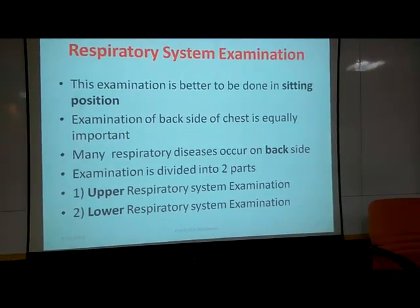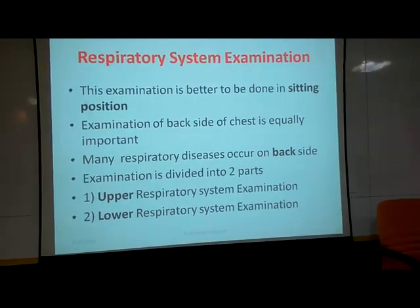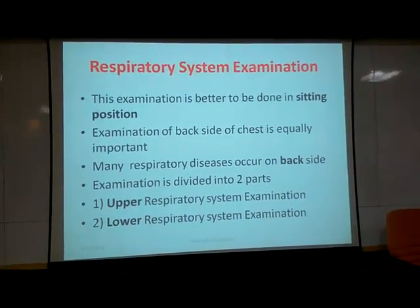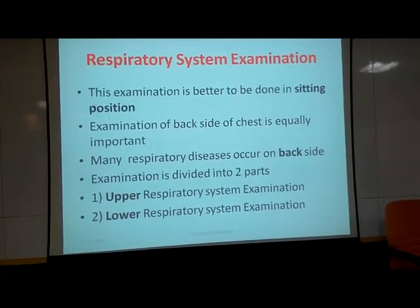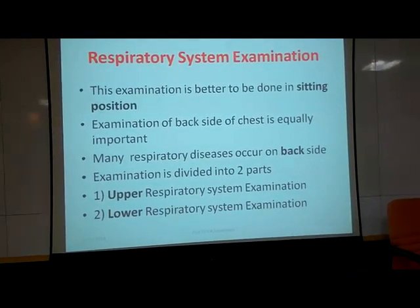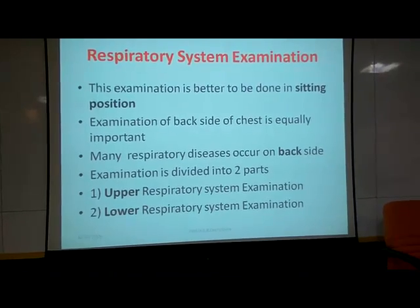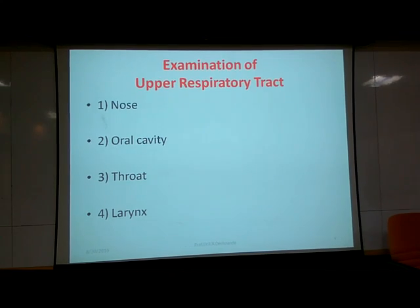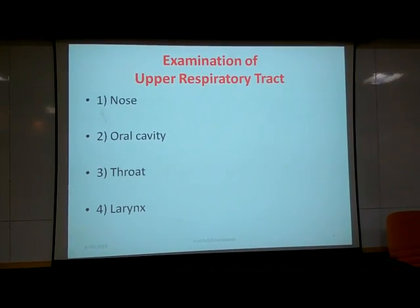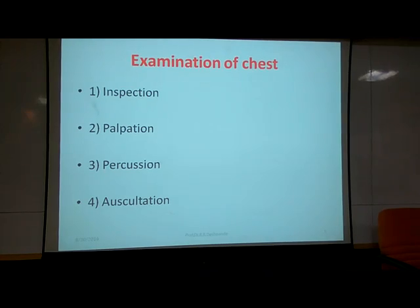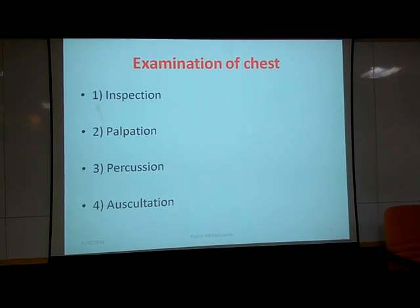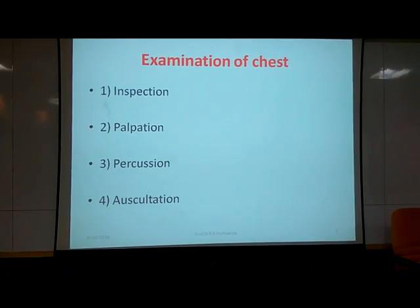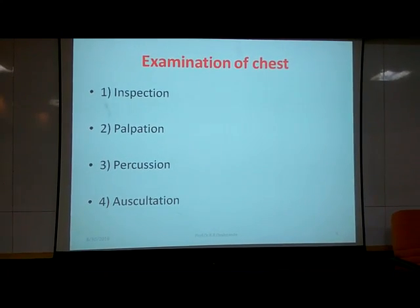This respiratory system examination is divided into two parts: upper respiratory system examination and lower respiratory system examination. When the upper part is affected, we call it URTI — upper respiratory tract infection. The upper respiratory tract consists of the nose, oral cavity, throat, and sinuses. When examining the lower part — the main part of the lung or chest — we do inspection, palpation, percussion, and auscultation.